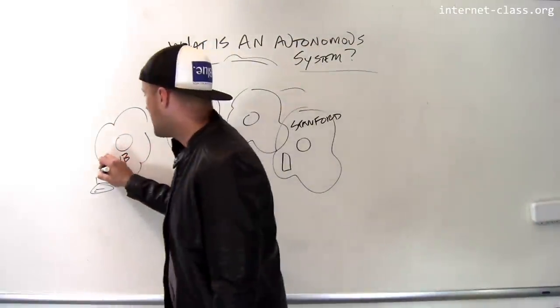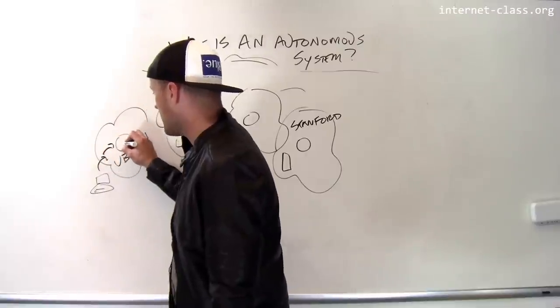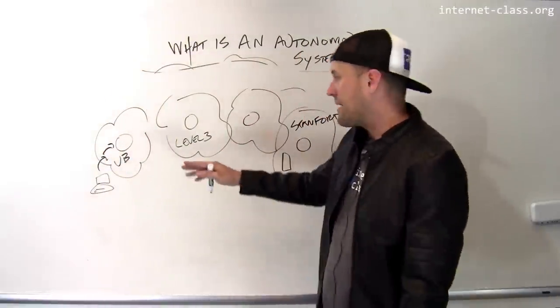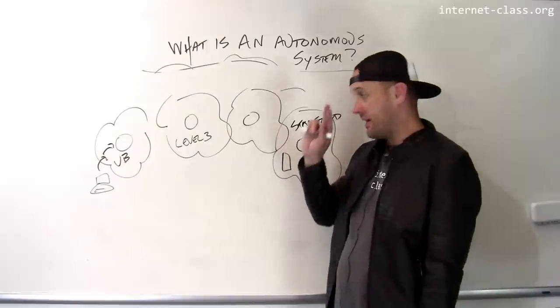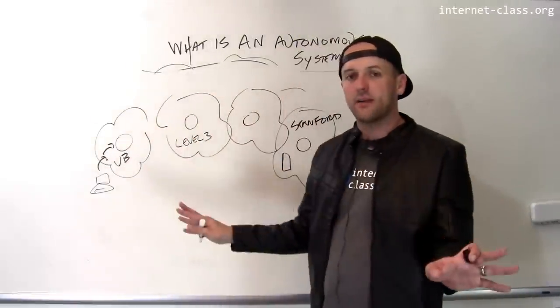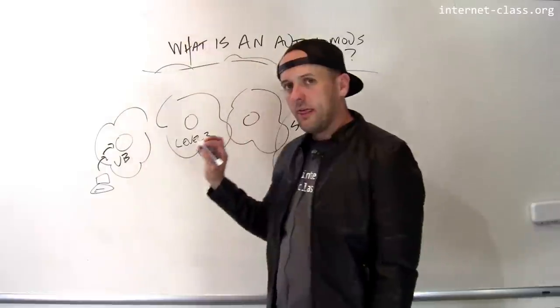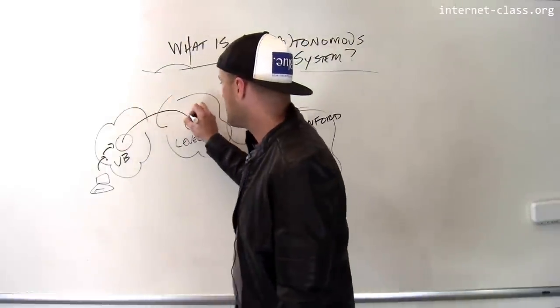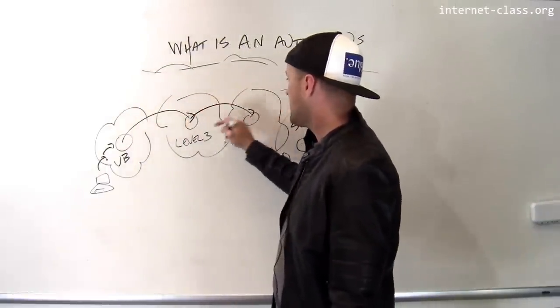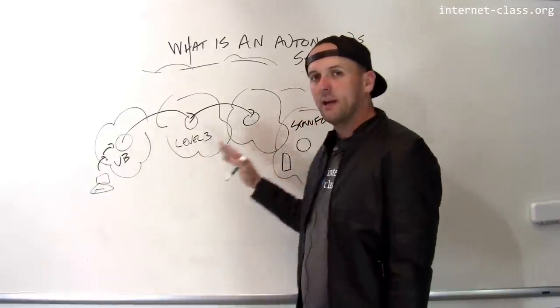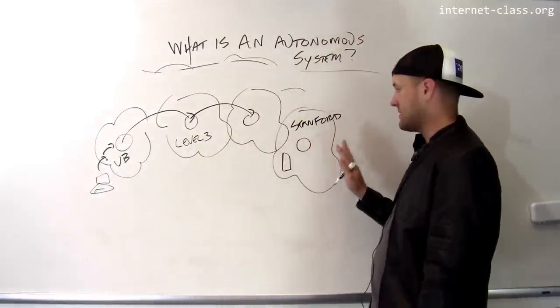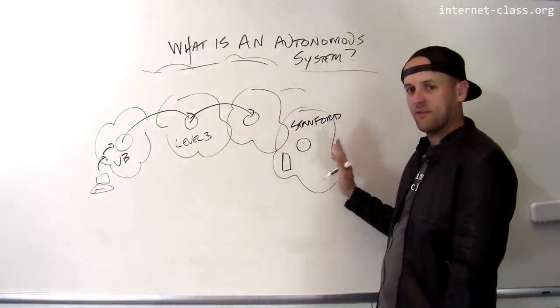The first thing that happens is that my packet has to get out of UB's network. The way it does that is it finds a computer at UB that's been configured to route traffic across the broader internet. And this configuration is entirely UB's responsibility. Once it reaches this router, then what the routers start to do is they start to cooperate.